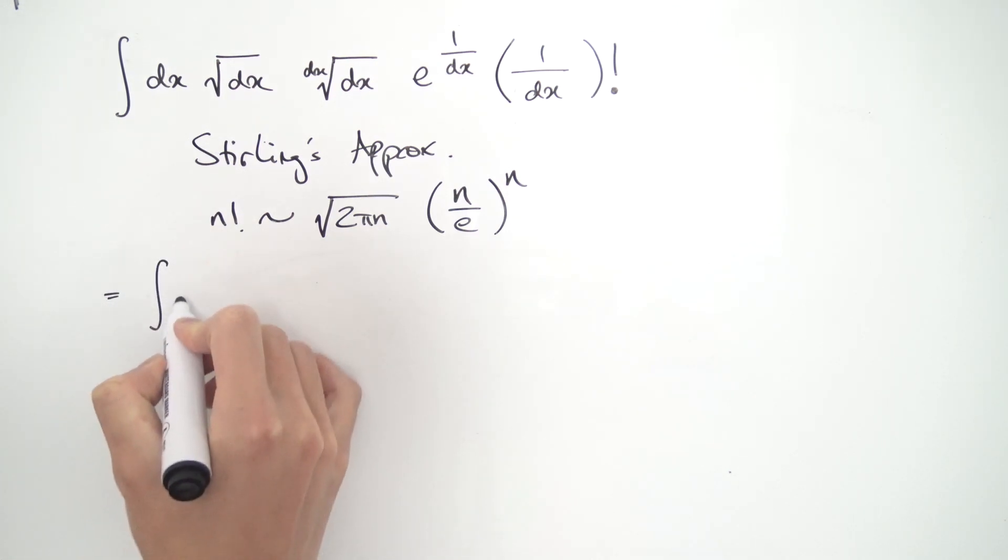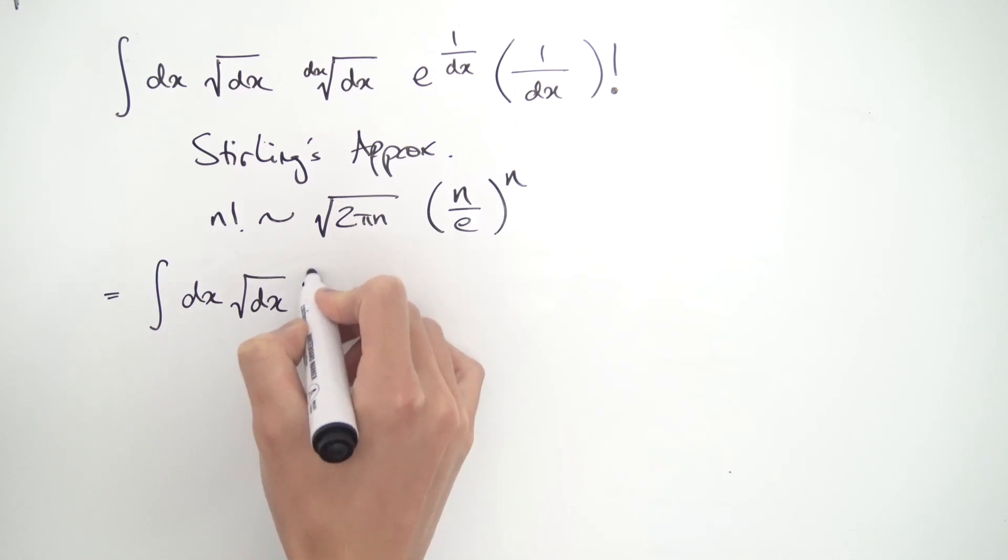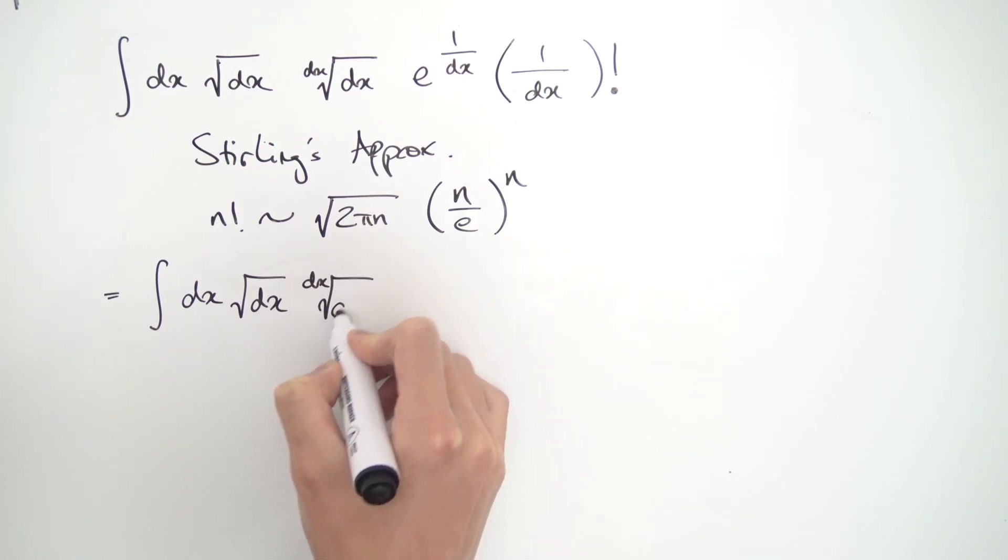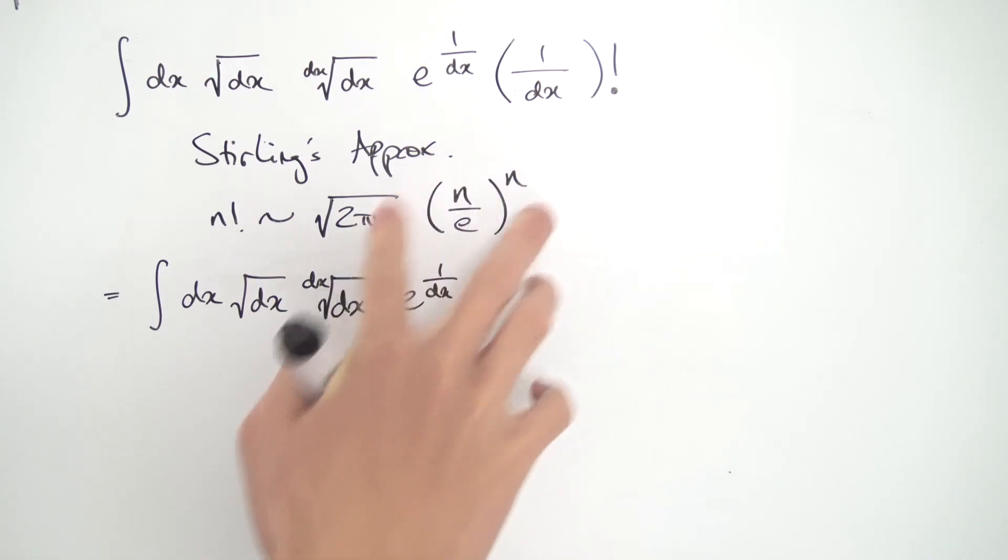So this is equal to the integral of dx square root of dx, dx root of dx, e to the 1 over dx. And so this guy over here, now we can just use this.